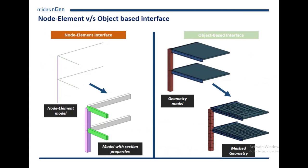Right off the bat, I'd like to cover the differences between what would be considered finite element software that is node-element based, versus what we're going to see in NGen, which is considered object-based. In programs like Gen, the other structural engineering program, you work by creating nodes, connecting them to make elements, then assigning sections to finally create the model with properties, and then run the analysis. So you're strictly starting from node-element connections.